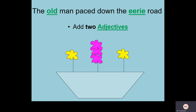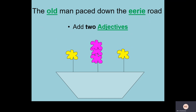Next, I'm going to look at adjectives to describe the nouns. I've got two nouns in the sentence — 'man' and 'road' — and I now want to include two adjectives to make it more detailed. In the flower box diagram, these are represented as two daisies either side of the central flower. The sentence now reads: 'the old man paced down the eerie road,' and it's starting to become more colourful.